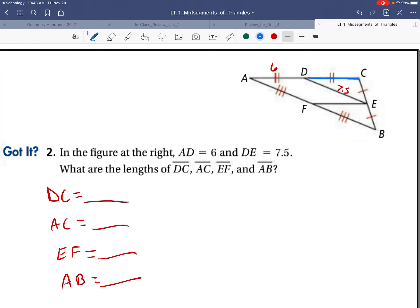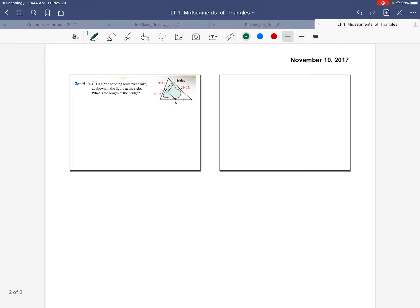DC is going to be congruent to AD, so that's 6. AC is the whole length, so that's 12. EF is a mid-segment to that whole length, which is 12, so that's 6. And AB is going to be twice 7.5, so it's 15. Let's go to the next slide.